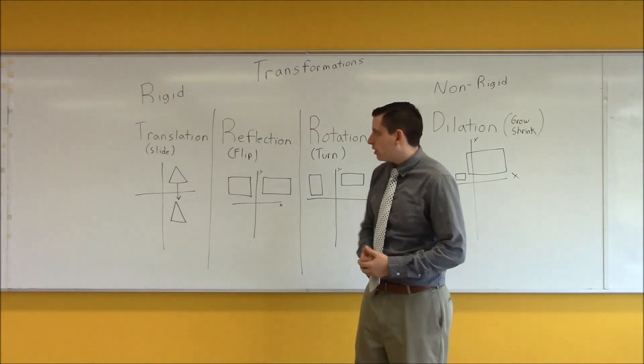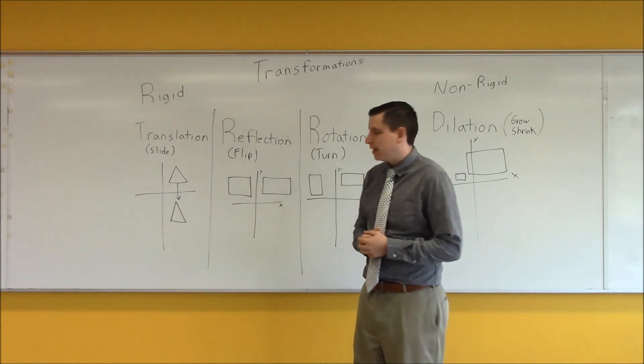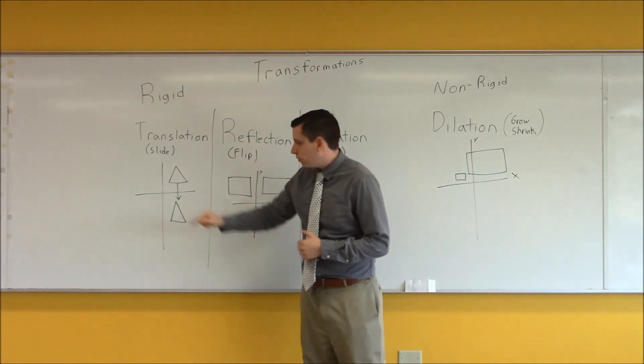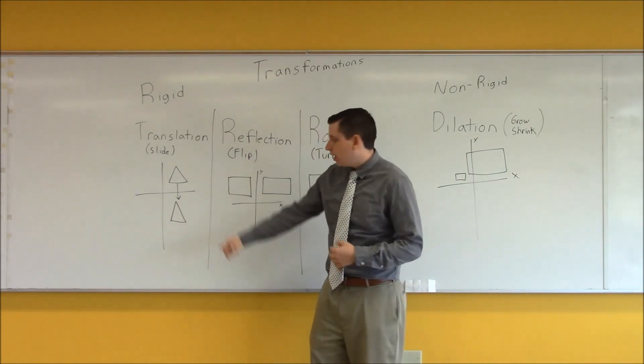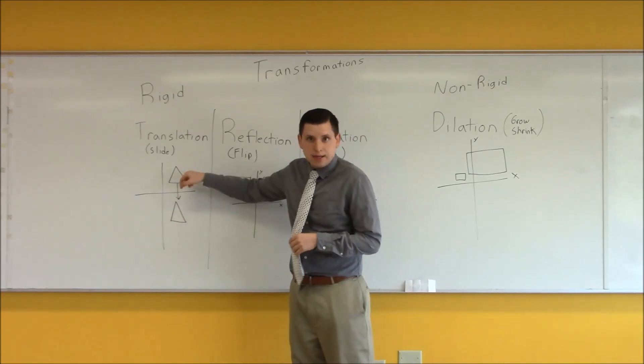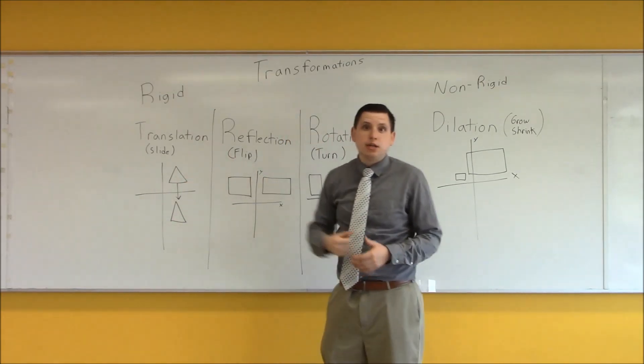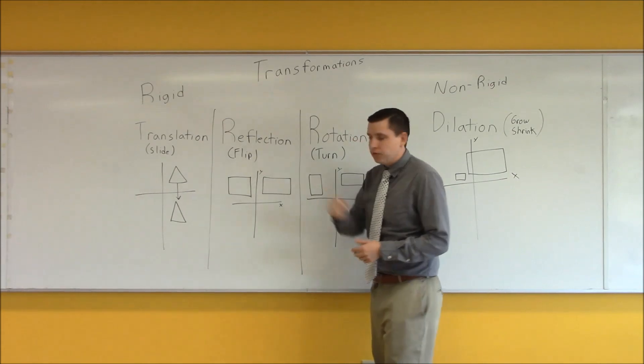With rigid transformations, there are three examples. A translation, which is the sliding of a figure, and this can either be moving up, down, left, right, or a combination of two of those.